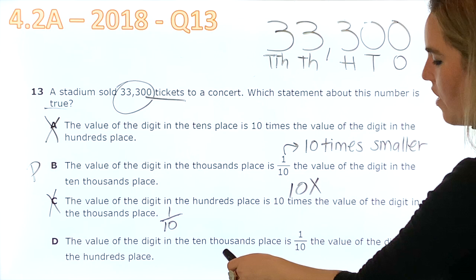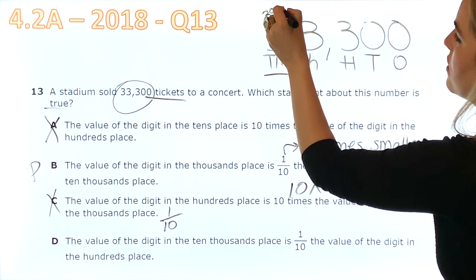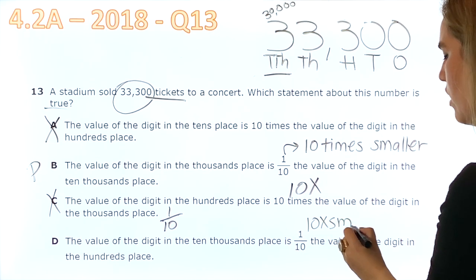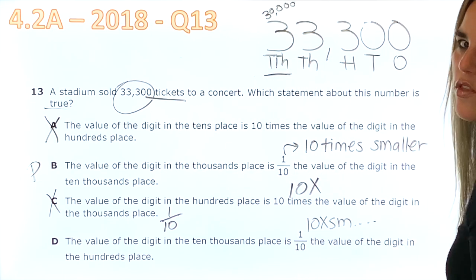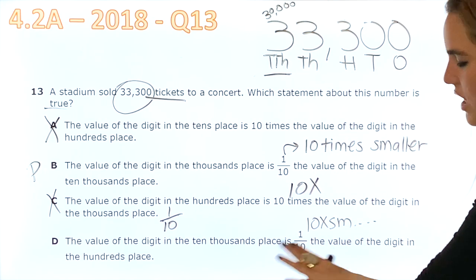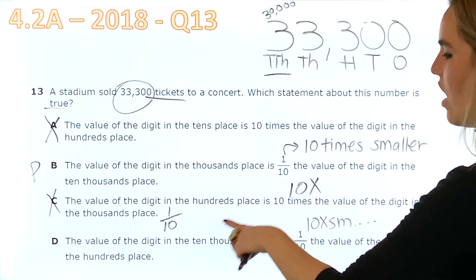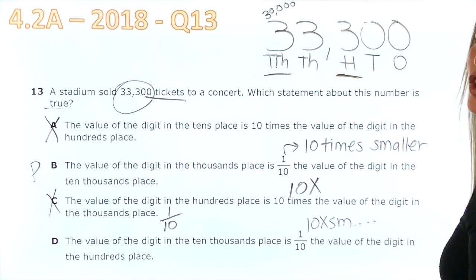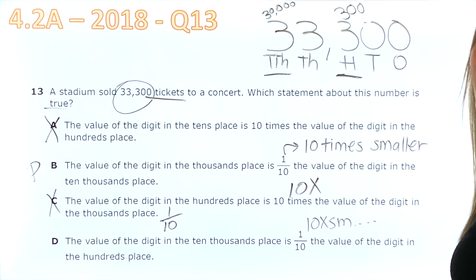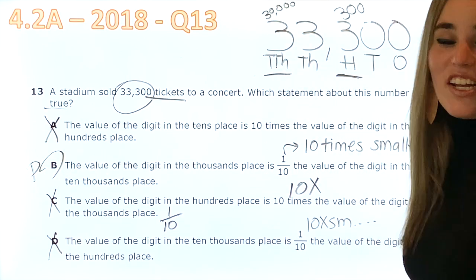The value of the digit in the ten-thousands place. Okay, this three. And this three is 30,000. It's one-tenth. So, ten times smaller. Just by now, I know that it's not smaller than anything because this three is the largest digit that we have. So, I'm already thinking that this is not right. But let's keep reading. The value of the digit in the ten-thousands place is one-tenth the value of the digit in the hundreds place. Boys and girls, do you think that 30,000 is one-tenth of 300? Absolutely not. So, now I know with all my heart that B is the correct answer.